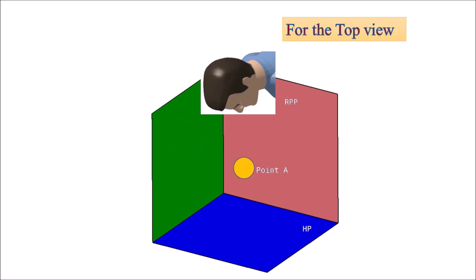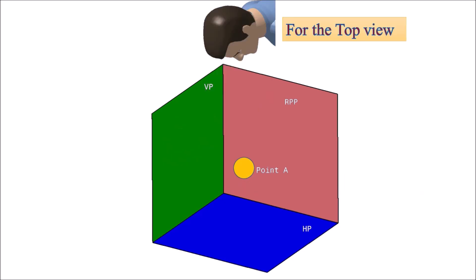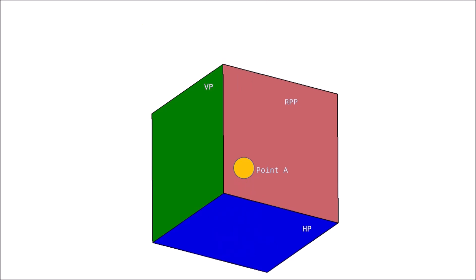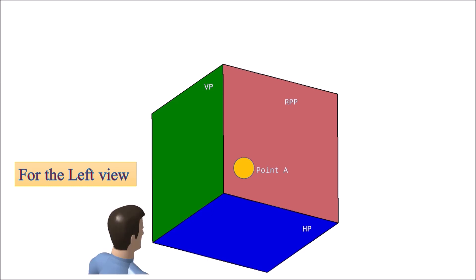Similarly, to capture the top view, the observer will be here, the point object here, and the plane of projection — the horizontal plane HP — here. And to capture the left side view or left view, the observer will be here, the point object here, and the plane of projection — the right profile plane RPP — here.